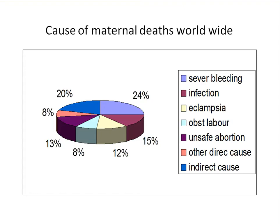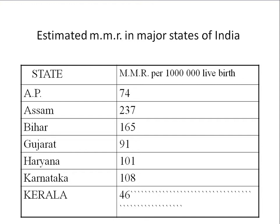Looking at the percentage causes of maternal deaths globally: 24% are due to severe bleeding, 15% due to infections, 12% due to eclampsia, 8% due to obstructed labor, 13% due to unsafe abortions, 8% due to other direct causes, and 20% are indirect causes.